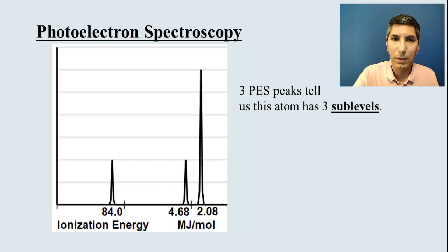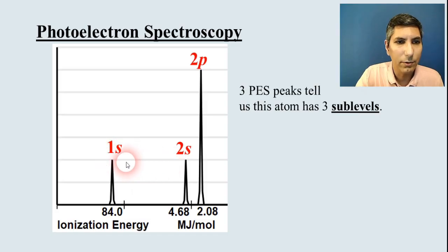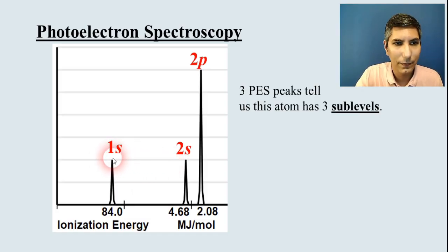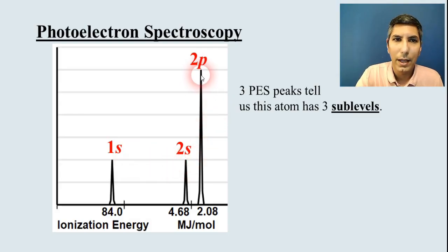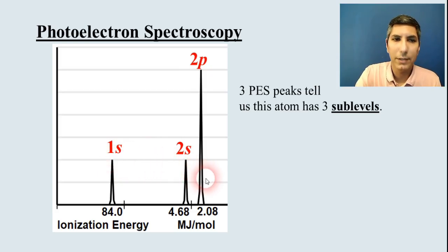This shows us that the Bohr model is flawed — there are sub-levels, not just energy levels. If we label these from left to right, the first one on the left is 1s, then 2s, then 2p. Those are the sub-levels that each peak will be representing.